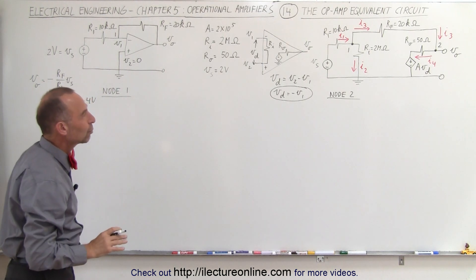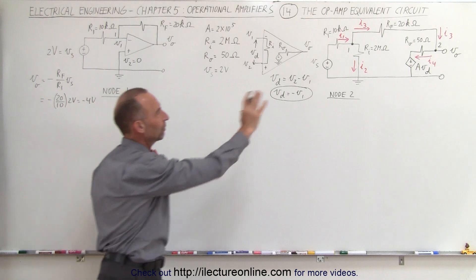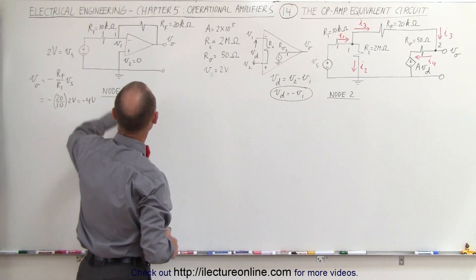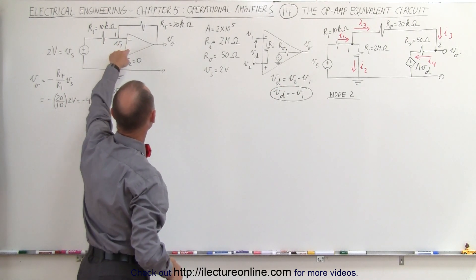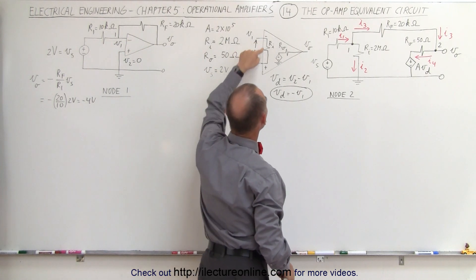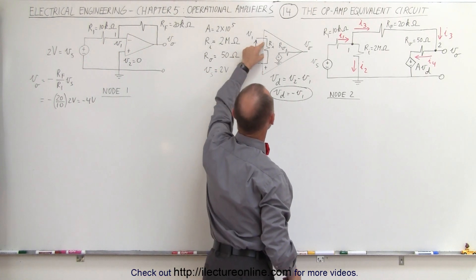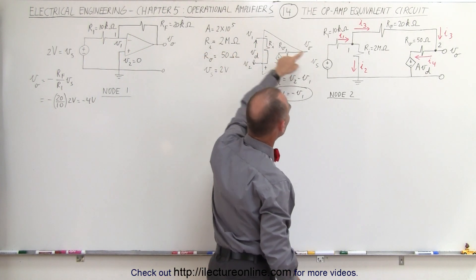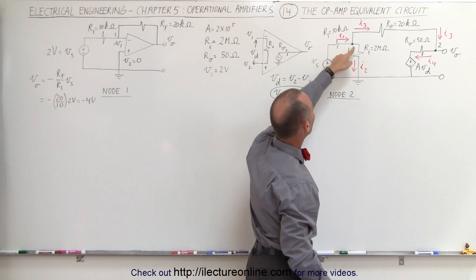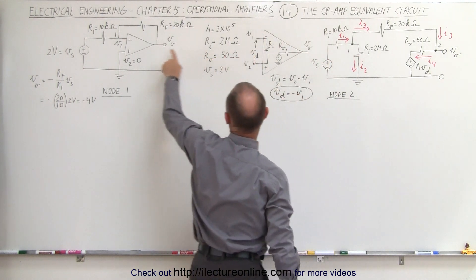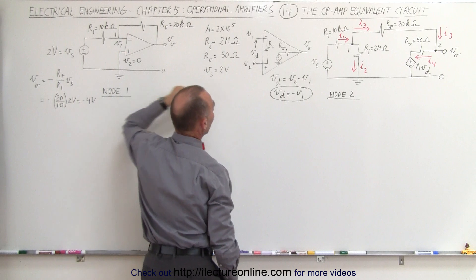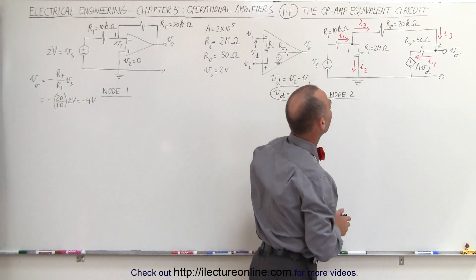Now, what will we get when we use the equivalent circuit? We have the internal resistance between the inverting and non-inverting terminals, which is set at 2 megaohms. So we have a 2 megaohm resistor between node 1 and ground.